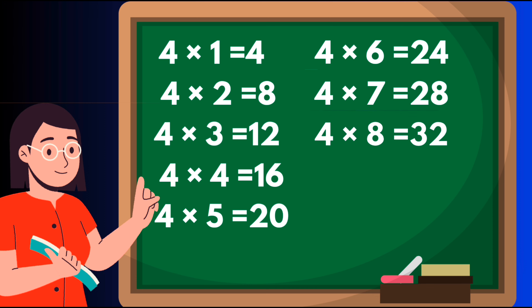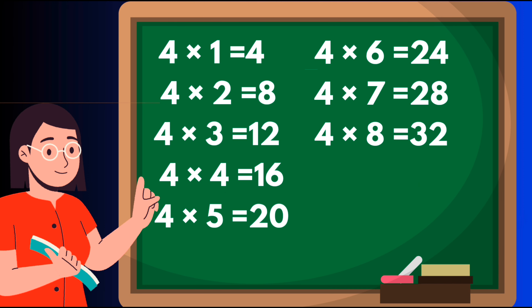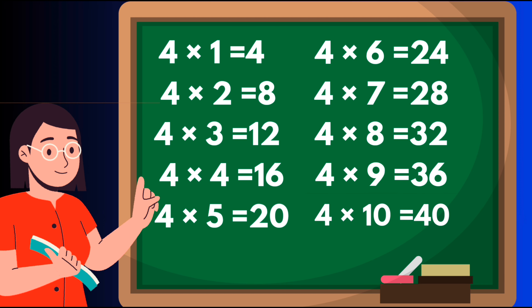Four eights are thirty-two, four nines are thirty-six, four tens are forty.